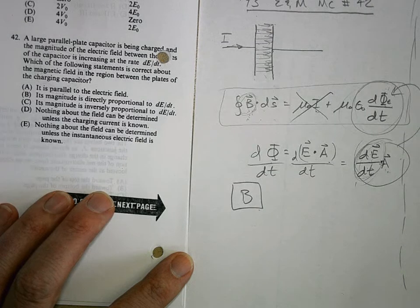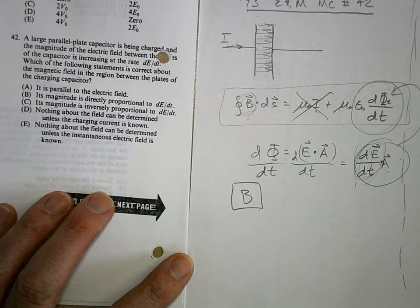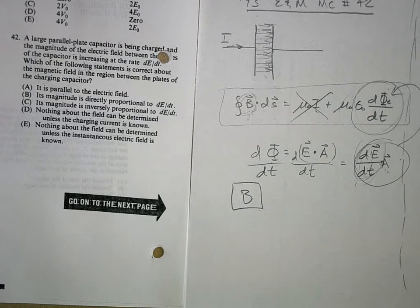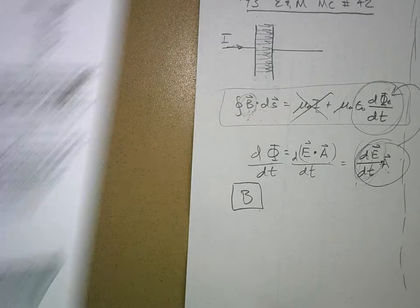Any questions on number 42? Does that make sense? So what do you have to memorize? Ampere-Maxwell's laws, or all of them, all of Maxwell's equations. And you have to kind of understand what they mean, conceptually as well as just have the equation memorized. It's hard, so good luck. That is all.